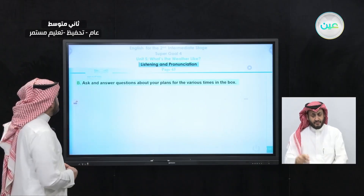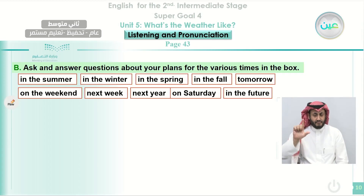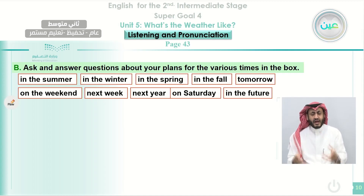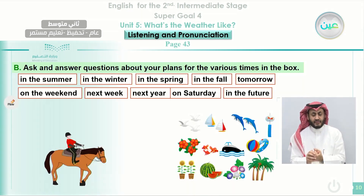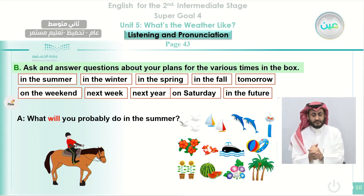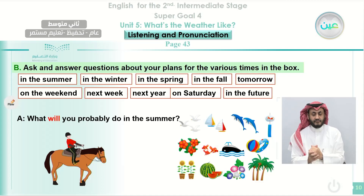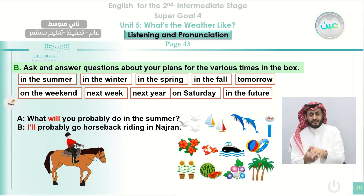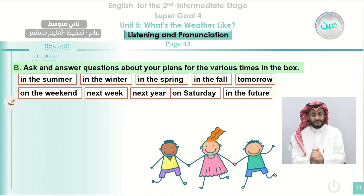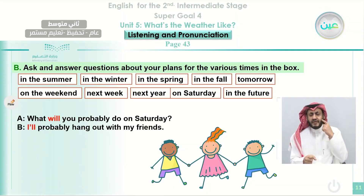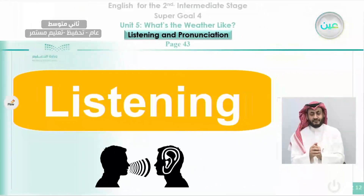From the previous lesson, you can use time phrases like: in the summer, in the winter, in spring, in fall, tomorrow, in the weekend, next weekend, next week, next year, next Saturday, and in the future. For example, 'What will you probably do in the summer? I will probably go horse riding in Najran.' Or 'What will you probably do on Saturday? I will probably hang out with my friends.' Now we move to our main class: listening.